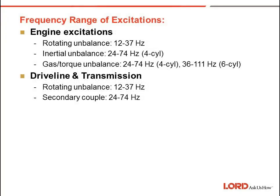Looking at the frequency ranges for these excitations: rotating unbalance is typically anywhere from 12 to 37 Hz. Inertial imbalances, such as for a 4-cylinder engine, are typically 24 to 74 Hz. Gas and torque inputs can vary from 24 up to 111 Hz for a 6-cylinder engine. Driveline and transmission rotating imbalances can vary from 12 to 37 Hz, and the secondary couple due to these can be 24 to 74 Hz, with additional inputs from misalignments and similar sources.